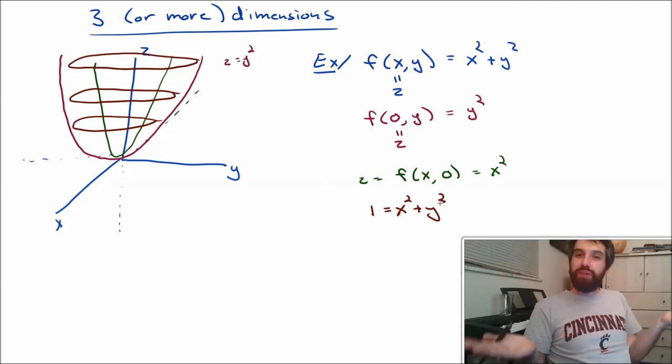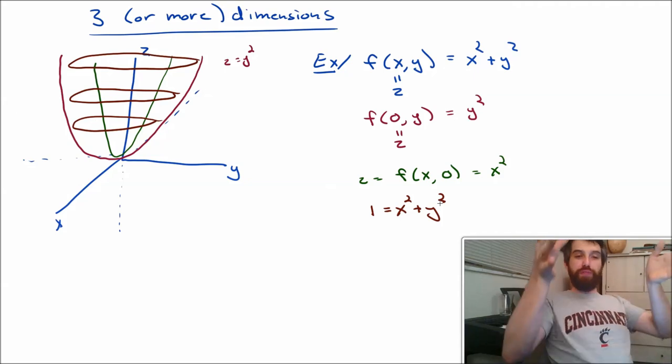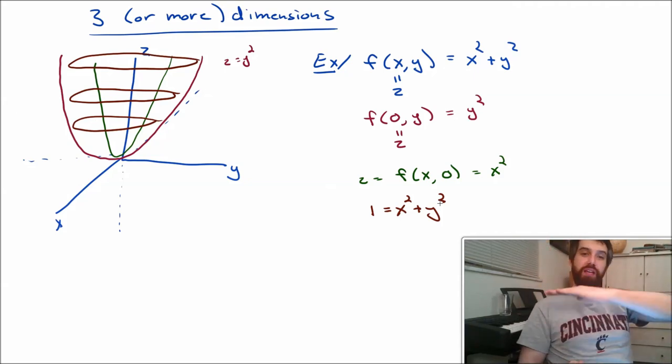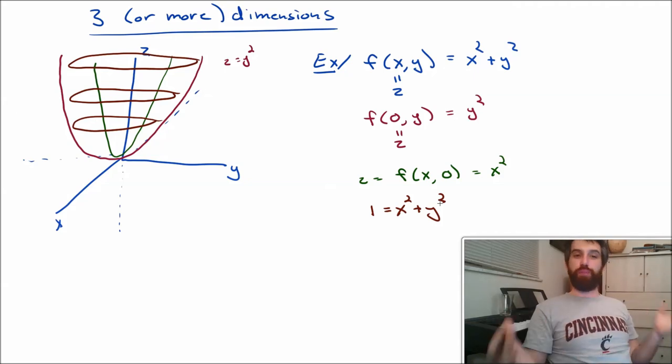And 1 equals x squared plus y squared, we've seen that before. That is the equation of a circle. So this bowl that we've created, if we do any slice plugging in a particular z value, is going to look like a circle. And then if you plug in like a y value or an x value, you're going to get a parabola. And so this is the kind of shape that we're going to get.